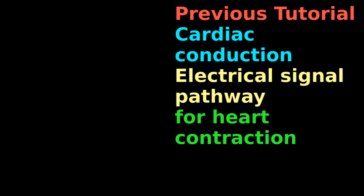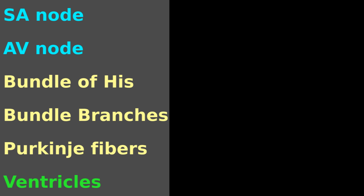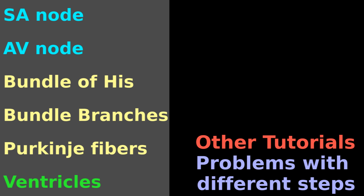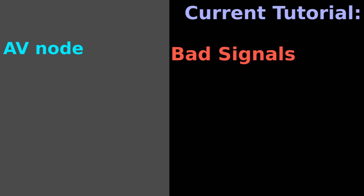Our previous tutorial introduced cardiac conduction of electrical signals that control heart contraction. While other tutorials explore problems with different steps, the current tutorial explores bad signals around the AV node, or an AV block.